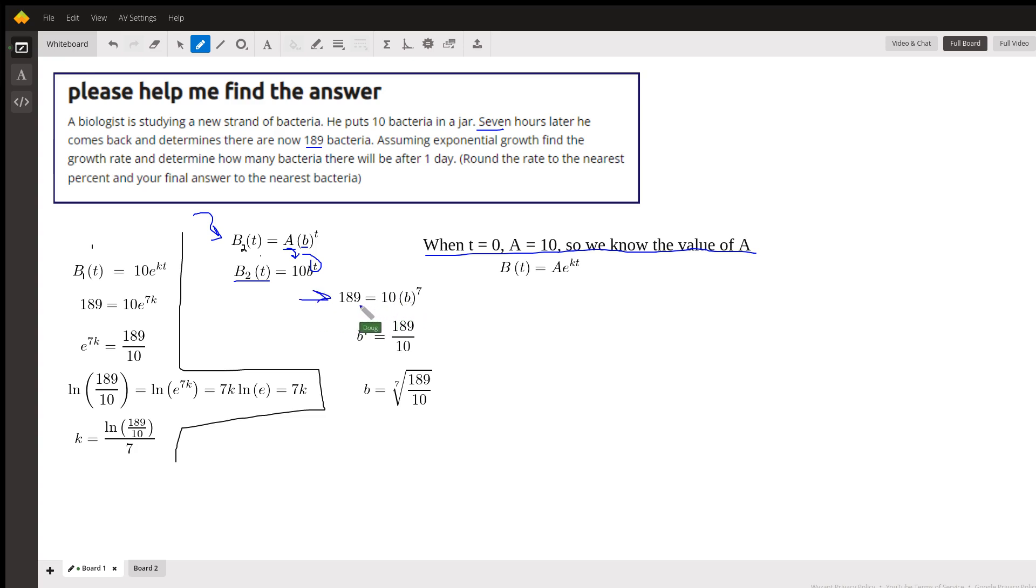When we do that, we divide both sides by 10 and take the 7th root of both sides. Or raise 189 over 10 to the 1/7th power.